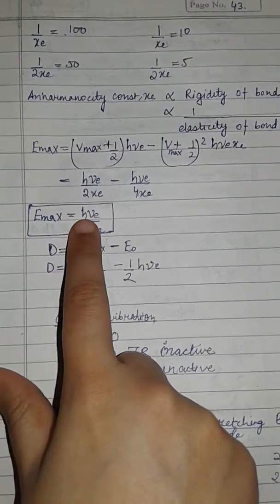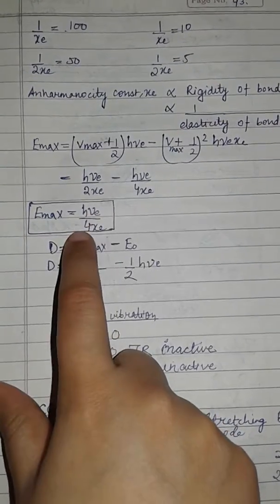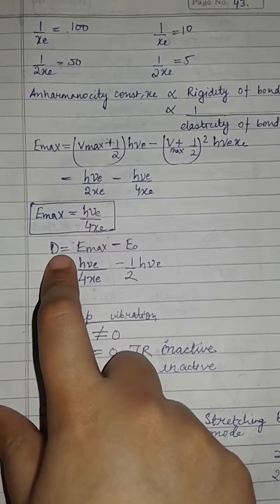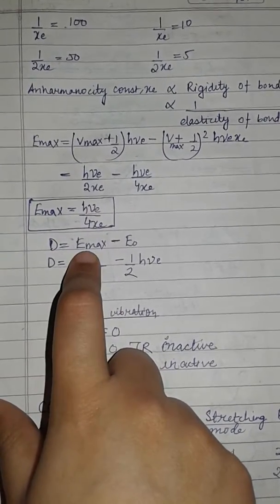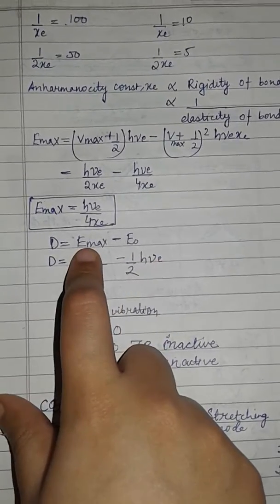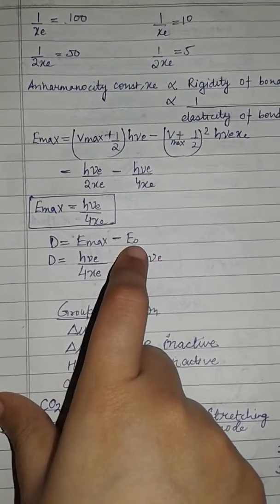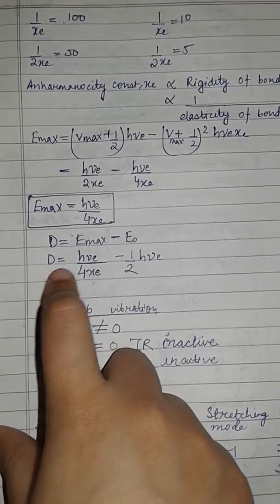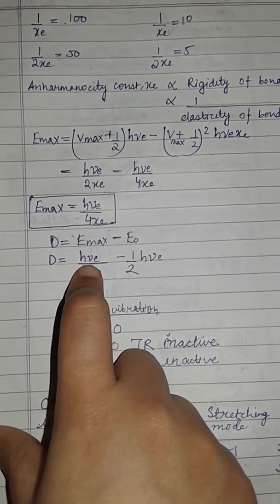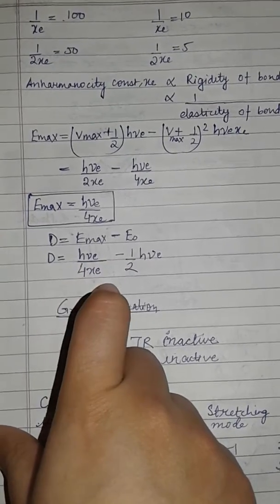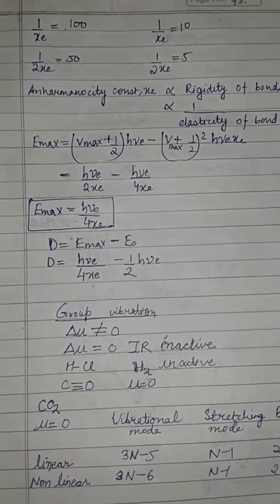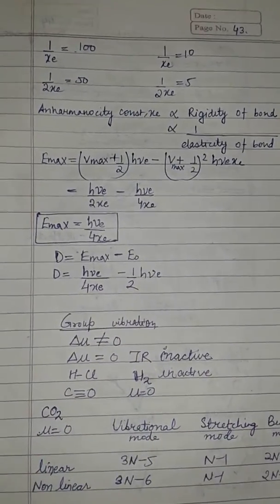The dissociation energy D equals E_max minus E_0 (zero-point energy), giving D = hν_e/(4X_e) minus (1/2)hν_e.